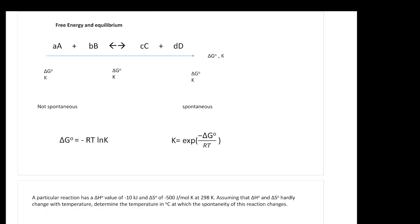We want to connect delta G knot with your equilibrium constant K. Delta G knot equals negative RT natural log K. R is a constant 8.314, T is your temperature in Kelvin, and K is your equilibrium constant.